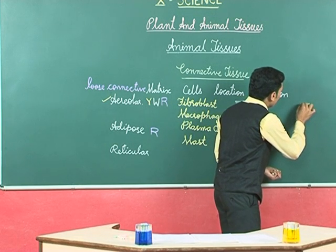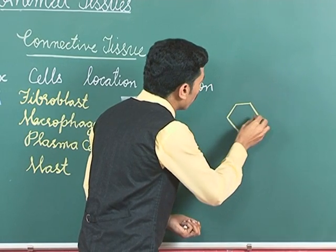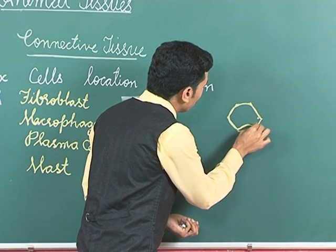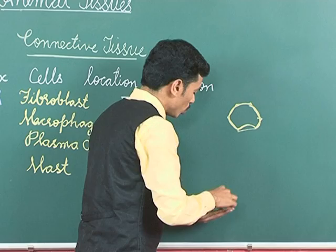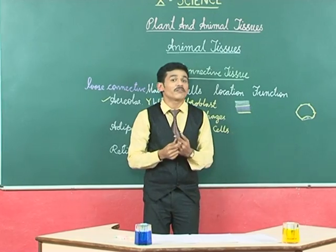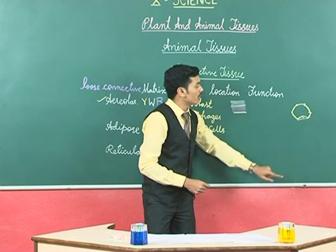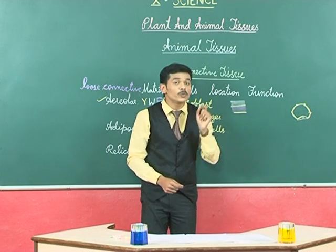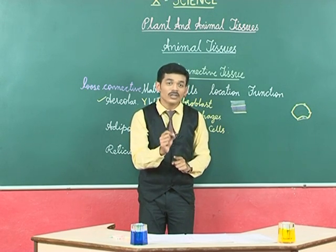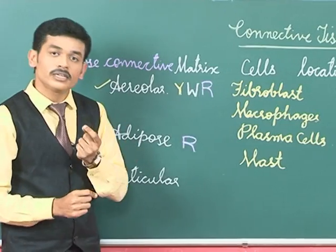Adipocytes are polygonal or round cells with a large empty cytoplasm and the nucleus pushed towards the periphery. This makes the adipocyte look like a wedding ring, which is why it is also called a signet ring cell. So this is about the cell present in adipose tissue.